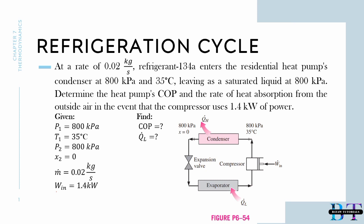Our quality at state 2 is zero, our mass flow rate is 0.02 kilograms per second, as well as our work in at 1.4 kilowatts. And we're tasked to find our COP and the heat added in our evaporator.